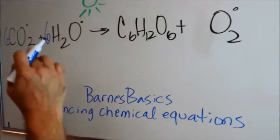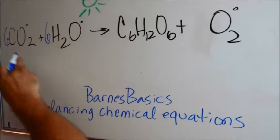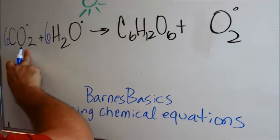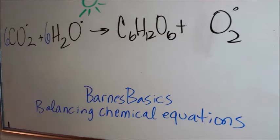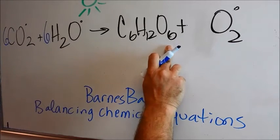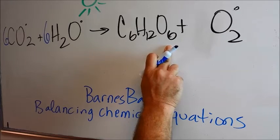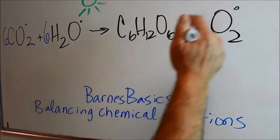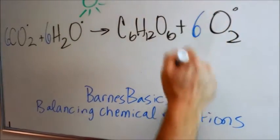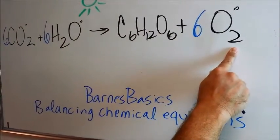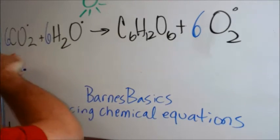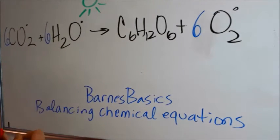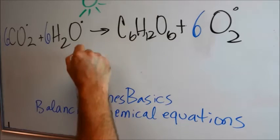Now we have an even number of oxygens. So there are 6 times 2 — there are 12 here — and 6 more, that's 18. So it appears that since we have 6 oxygens here already, then we can put a 6 here. 6 times 2 times 2 is 12, plus 6 is 18. 6 here, 12 here. I think we have done this class. Beautiful.